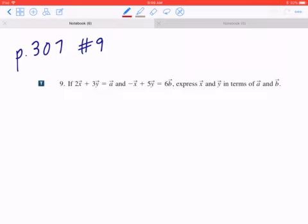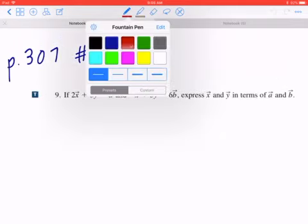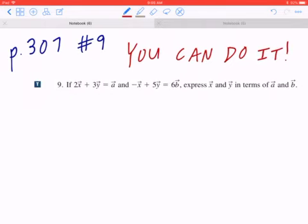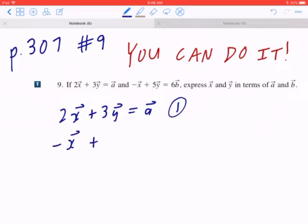Okay, so, for number nine, on page 307, the question says, if 2x plus 3y equals a, and negative x plus 5y equals 6b, express x and y in terms of a and b. So, even though it's a thinking question, you can do this. The most important part is the mechanical steps, so make sure when you're collecting like terms, you're copying and pasting correctly, and all your mental math is good. So, I'm just going to copy this first. So, step one, I'm copying 2x plus 3y equals a. I'm going to call this equation number one. Negative x plus 5y equals 6b. I'm going to call this equation number two.